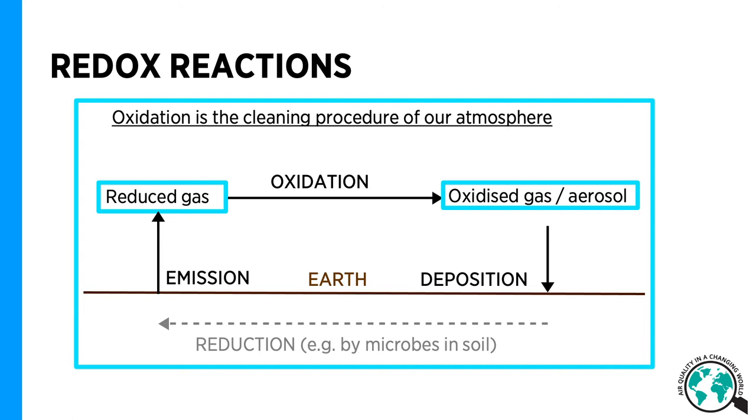Thus, an element in a compound is emitted from Earth in a reduced state. For example, carbon in methane emitted from peatlands is in oxidation state minus 4. During its time in the atmosphere, it will undergo oxidation. In case of methane, this oxidation is driven by the OH radical. And in the end, CO2 is produced, where carbon is found in the oxidation state of plus 4.